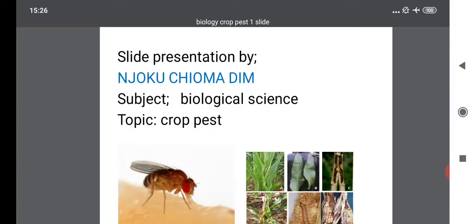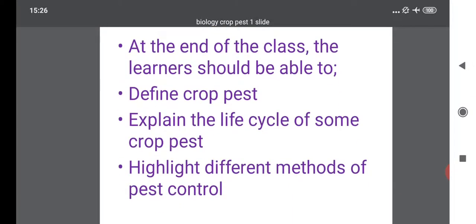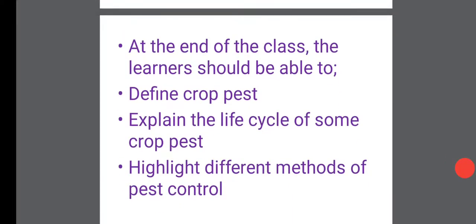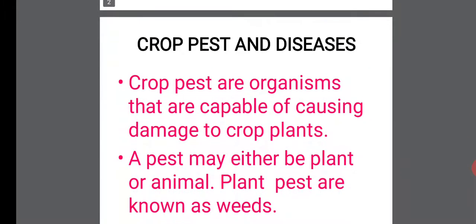We are going to look at crop pests. Pests attack crops and decrease their production. A given pest must be present in large numbers to greatly affect production, and these pests usually destroy crops causing various effects. At the end of this class, I expect you learners to be able to define crop pests, explain the life cycle of some crop pests, and highlight different methods used to control crop pests.